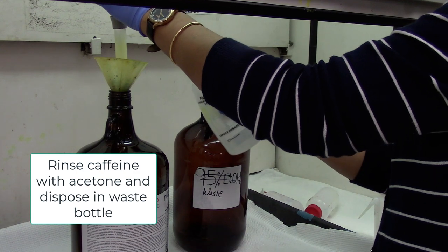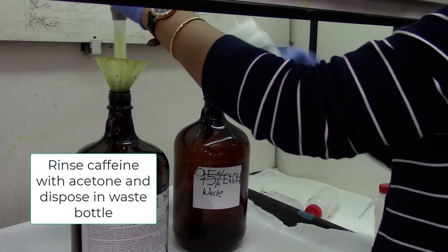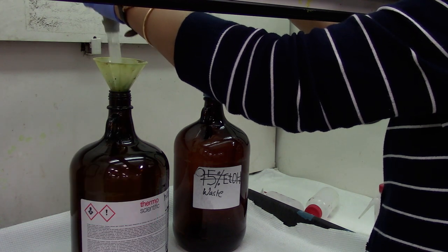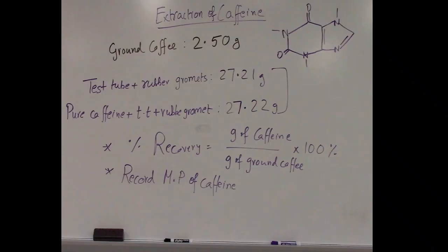Scrape some caffeine into a watch glass and record a melting point. Once done, rinse the caffeine into the waste bottle with some acetone and using the data find the percent recovery of caffeine. Thank you.